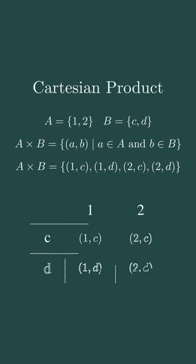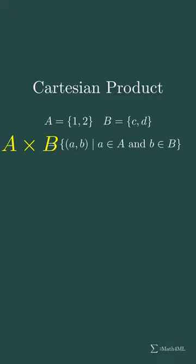Let's talk about Cartesian products. Imagine you have two sets, set A and set B. A Cartesian product is simply the set of all possible ordered pairs where a is an element of A and b is an element of B.